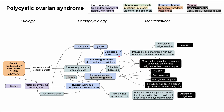The LH-FSH balance is also relevant to fertility and ovulation. Because your LH is much higher than your FSH, you'll have impaired follicle maturation with cyst formation due to lack of follicle rupture. This results in oligo-ovulation — ovulating less than you're supposed to — or in some cases not ovulating at all, which is anovulation. This is what causes the infertility in PCOS.